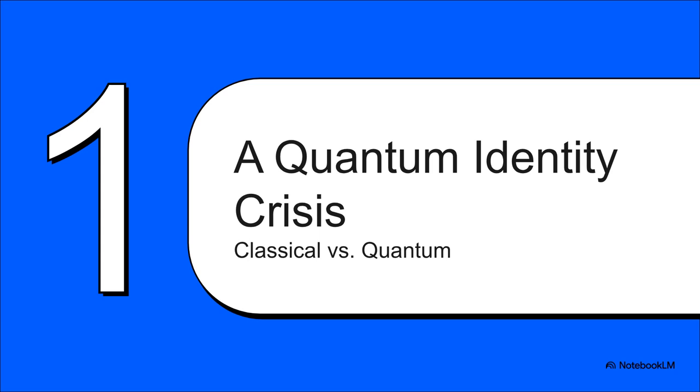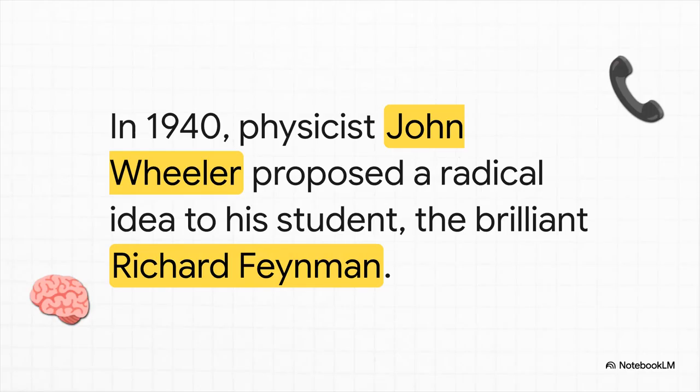Wheeler was just taking our everyday logic. If two things are completely identical, they must be the same object. And he applied it to the entire universe. So that one conversation between Wheeler and his student, a young Richard Feynman, kicked off one of the greatest what-if scenarios in all of physics. Let's unpack how this incredible idea is even supposed to work.